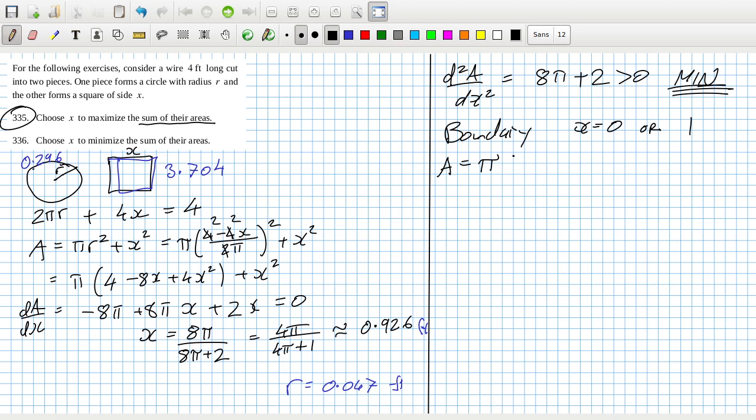So four divided by 2π. The area would be πr² which is 1.27, and then the other area when x is one would be one. So yeah, we want to go with x is zero.